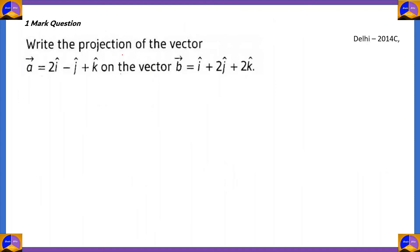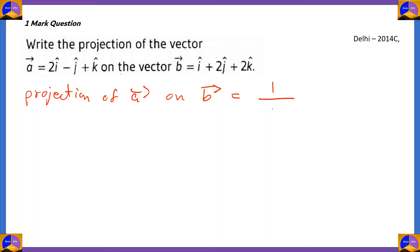Now let's look at the next question. Write the projection of vector a bar = 2i − j + k on vector b. We know our values of a and b. The projection of vector a on vector b is defined by the formula: 1 by modulus of vector b times vector a dot vector b. So we find mod vector b and the dot product a bar · b bar.